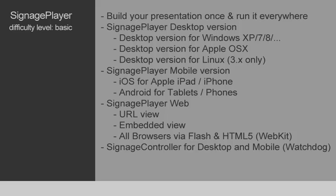Keep in mind that the Linux version only supports the Signage Studio up to version 3.0, as it's been discontinued. So if you're starting now with the system, we recommend that you pick either OS X or Windows if you plan on using the Signage Player desktop version. The Signage Player mobile version was designed for both iOS — such as the iPad or iPhone — as well as Android for tablets and phones.